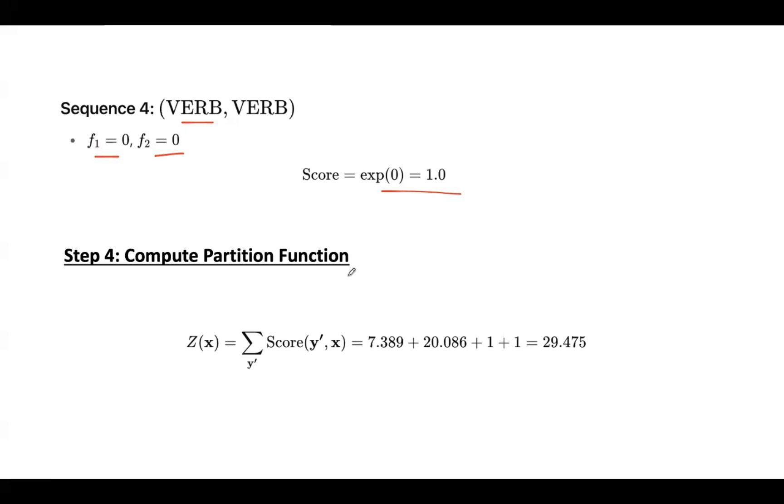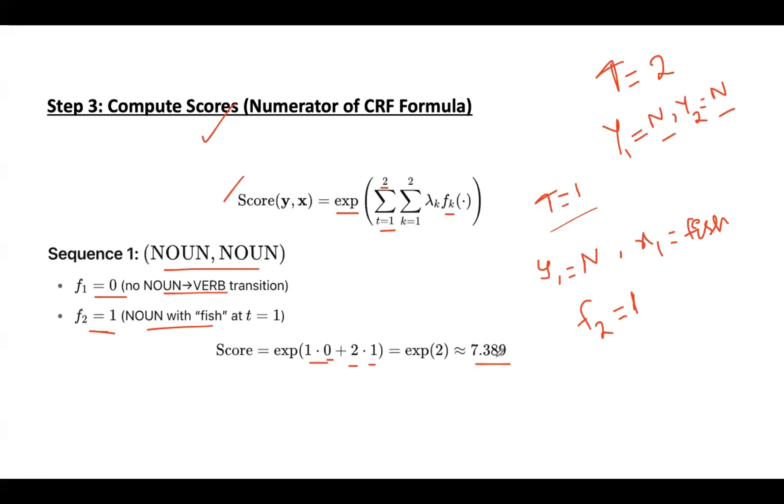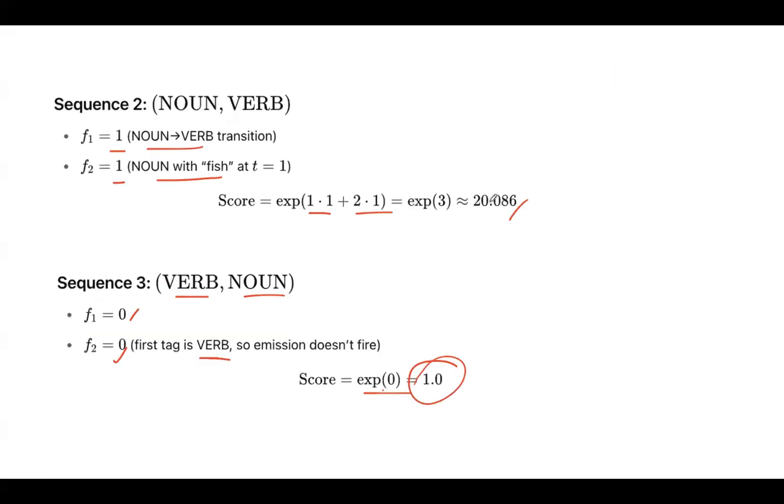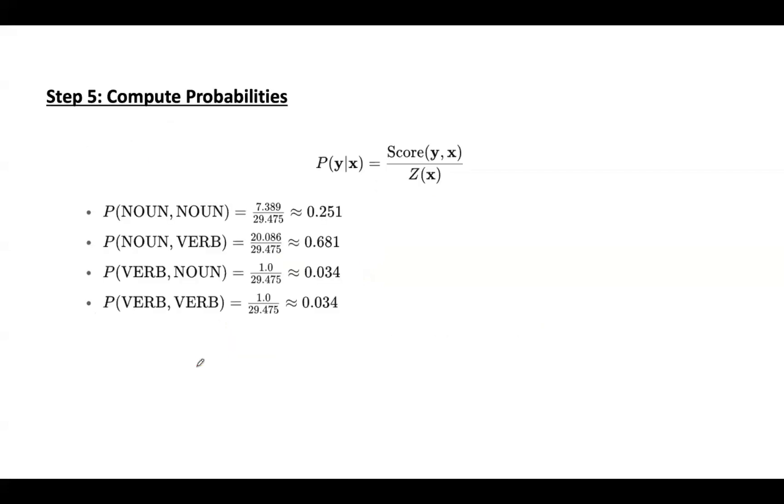Now step 4 is to compute the partition function. Take all the values and calculate sum. So, add 7.389, 20, 1 and 1. This value gives you the partition value, z of x.